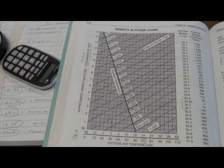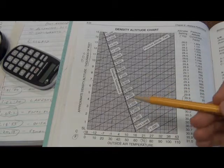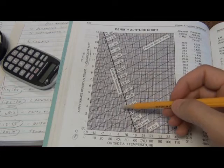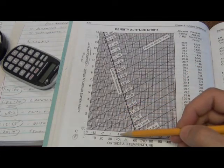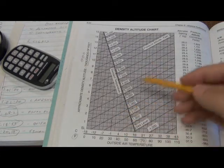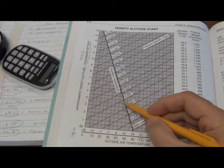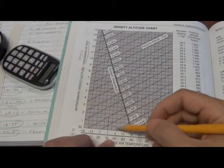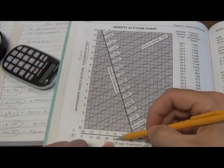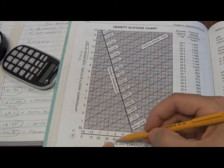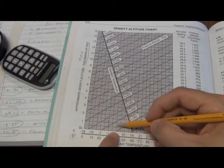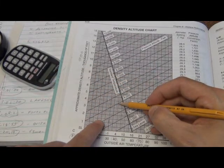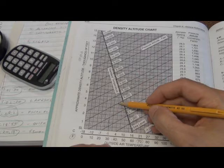So let me just make up something. We're looking up a particular density altitude. Let's pretend that we're dealing with a question that tells us the pressure altitude is 4,000. And the outside air temperature is 40 degrees. So what you do is you look for the 40 degrees Fahrenheit at the bottom of the chart and then you track up that line until you hit the diagonal line that's represented by the 4,000. So that hits right about there.